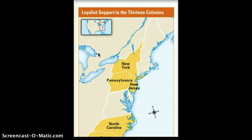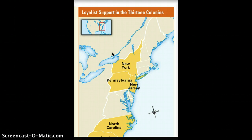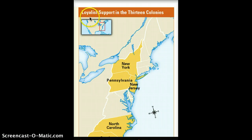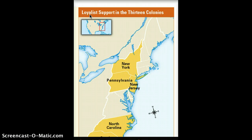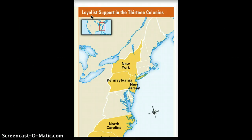Here's our second map. We have the same area, but with different information — this one says loyalist support in the 13 colonies. We need to determine: what exactly is a loyalist? We can find out by going to our glossary or looking it up online. Notice the word 'loyal' inside it. What does it mean to be loyal, and who are they being loyal to?